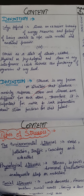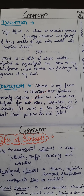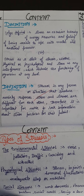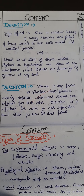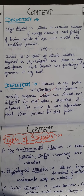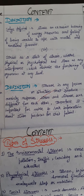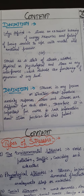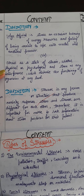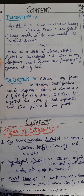First is the definition of what stress really is. Stress is an excessive burning of energy resources — the energy in our body can get burned in excessive amounts when we are unable to cope with mental and emotional pressure. Stress is also defined as a state of strain, whether physical or physiological.